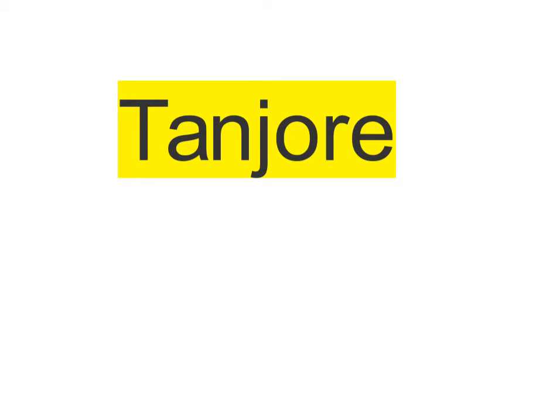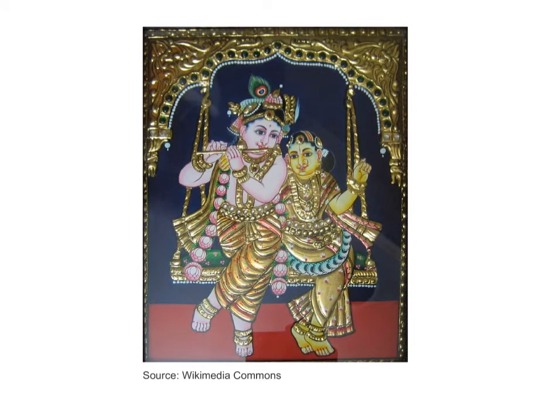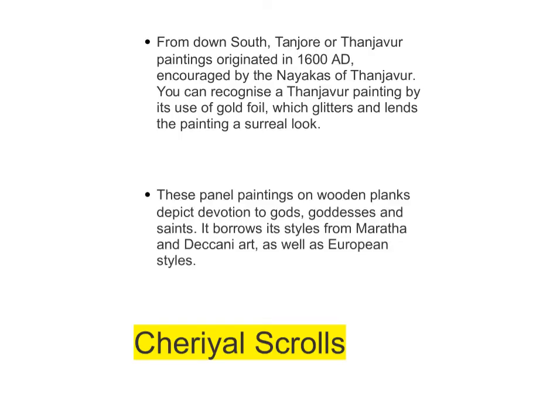The next folk painting is Tanjore painting, from Tamil Nadu. It is essentially a glass painting, as you can see in the picture. It originated in 1600 AD and was encouraged by the Nayakas of Tanjore; later the Marathas also influenced it. It uses a gold foil that glitters, giving the painting a surreal look. These panel paintings on wooden planks depict devotion to gods, goddesses, and saints.